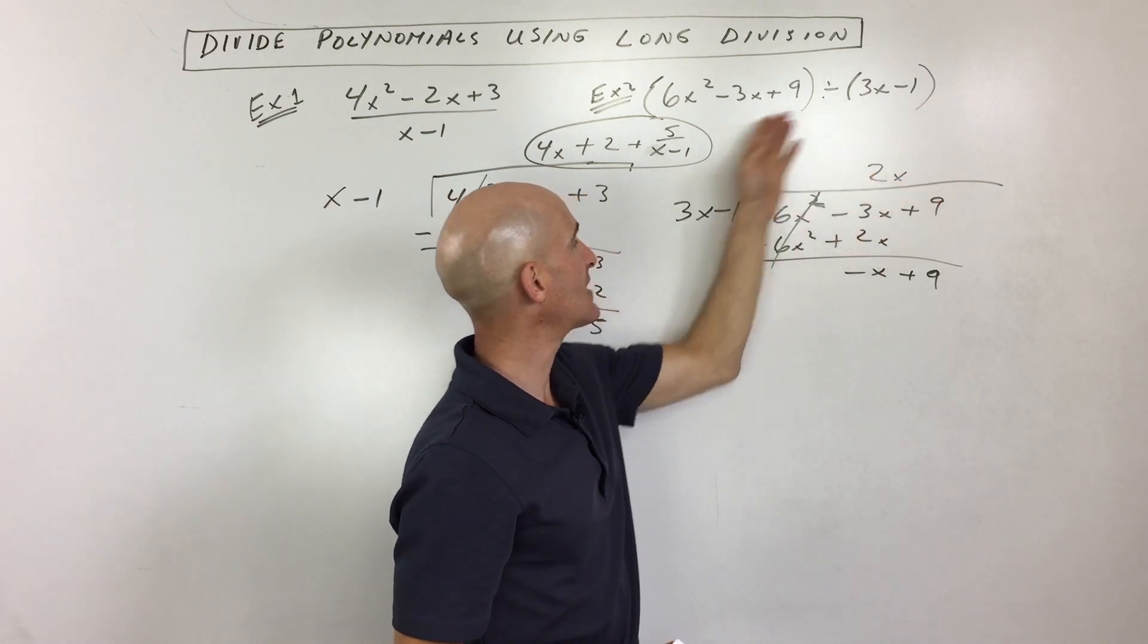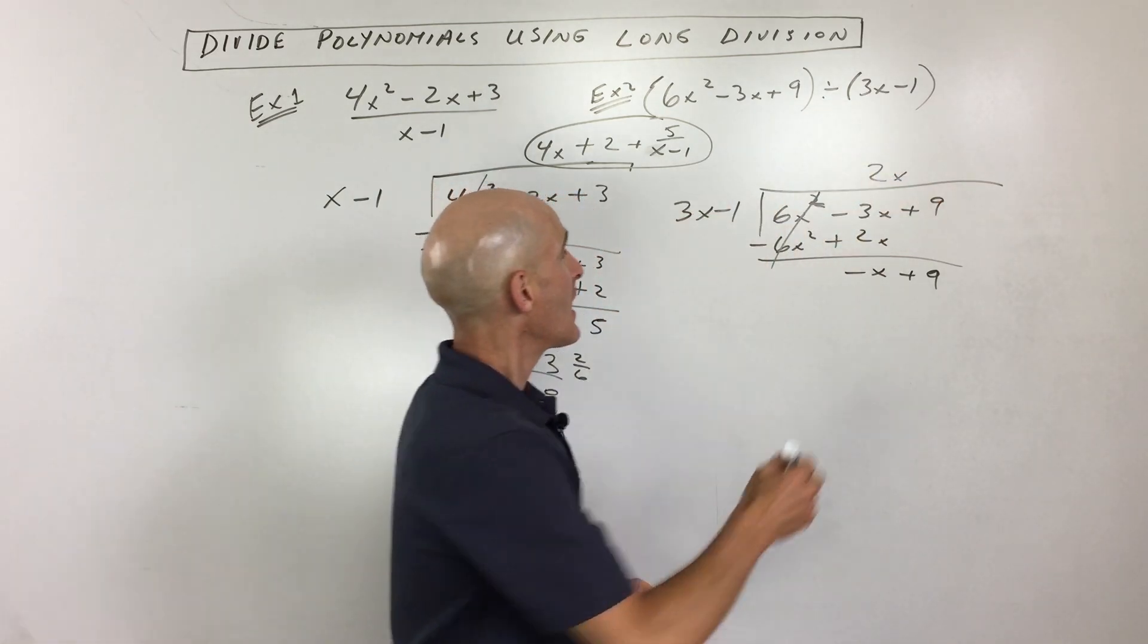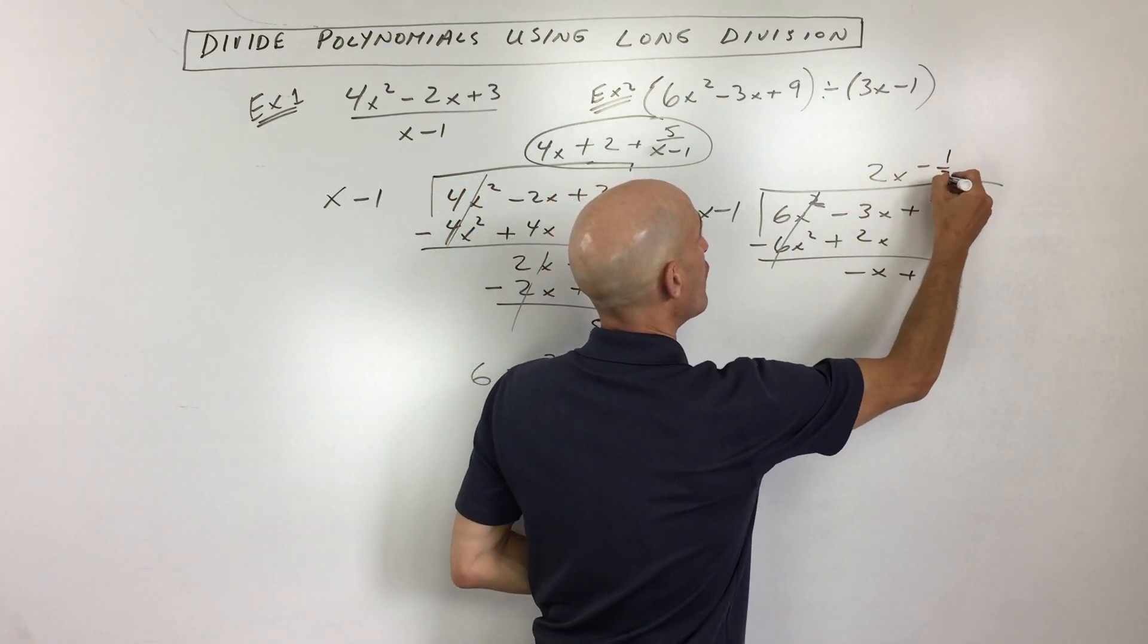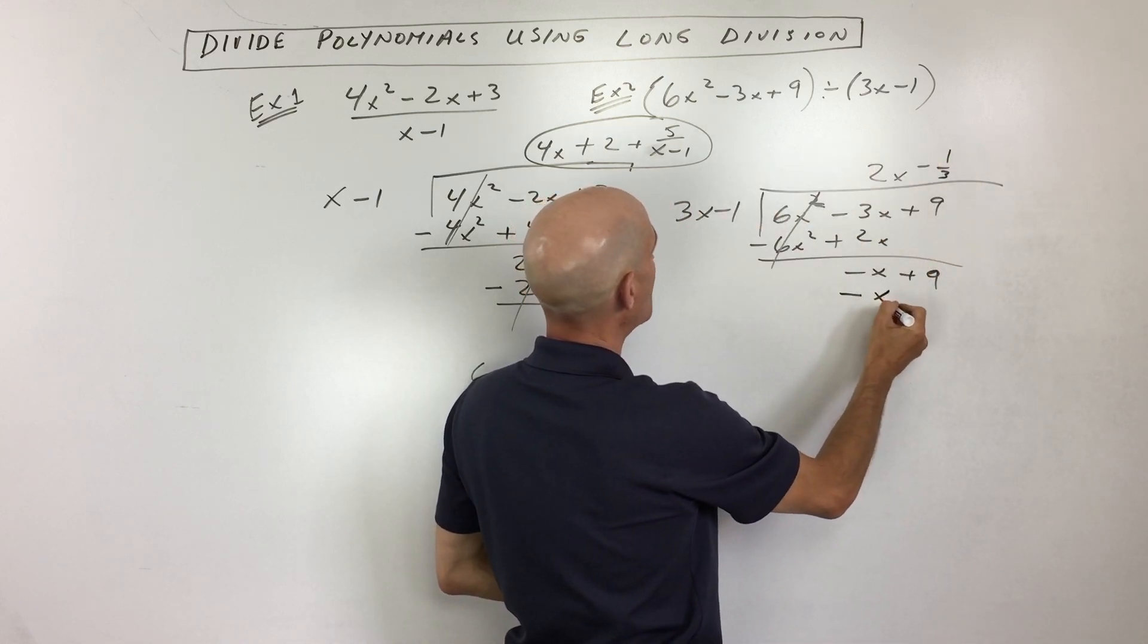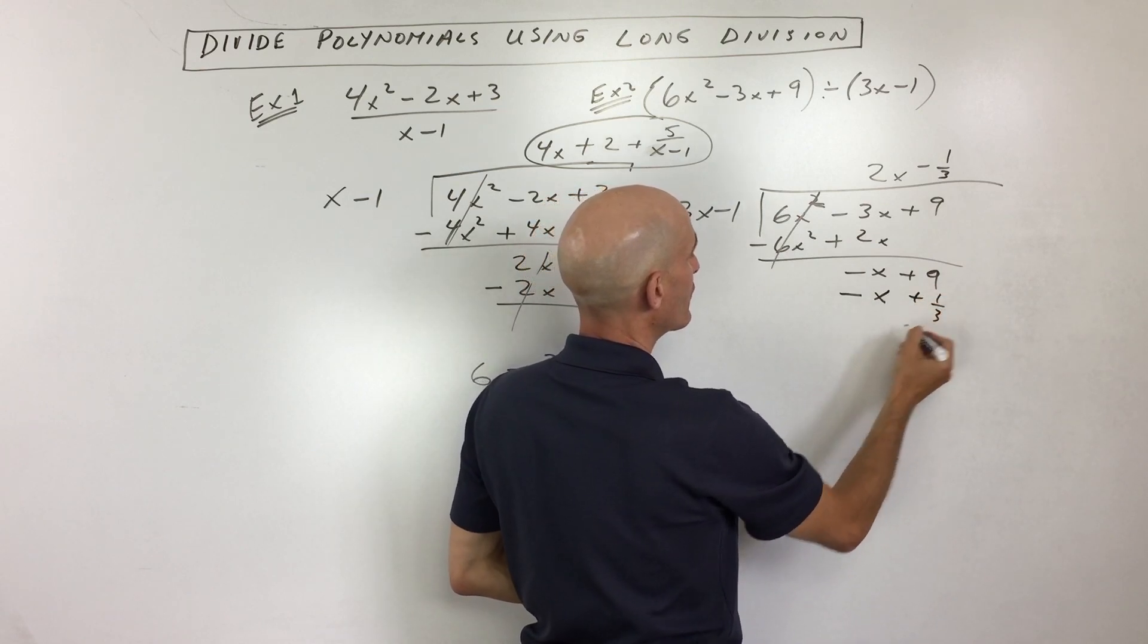Or you could say like I was doing what times 3x is negative x? And I can see that that's going to be negative 1 third. So if I distribute that, that gives me negative x. And this gives me positive 1 third.